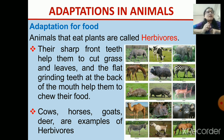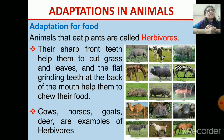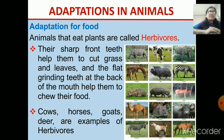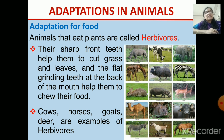Their sharp front teeth help them to cut the leaves or grass and they eat it. The back teeth are flat, by which they can grind their leaves, branches, or grass. The thin weak branches they can also eat. So their teeth are adapted so that they are able to eat the leaves and grass.